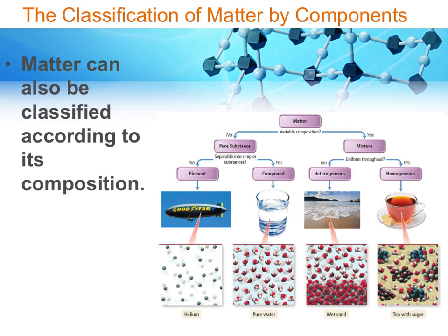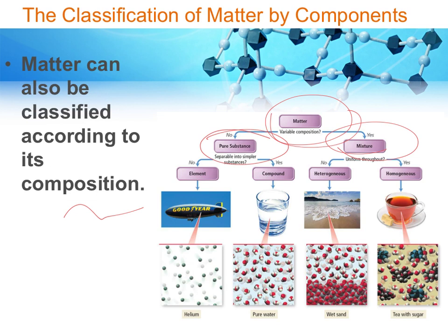What I want to talk about more in this lecture is the classification of matter by its composition. The major subdivisions are whether the matter is a pure substance or a mixture. A pure substance must have only one thing in it — either a pure compound or a pure element. Pure distilled water, for example, is a pure substance, while tap water is a mixture. As soon as you add a second, third, or fourth ingredient, you have a mixture.